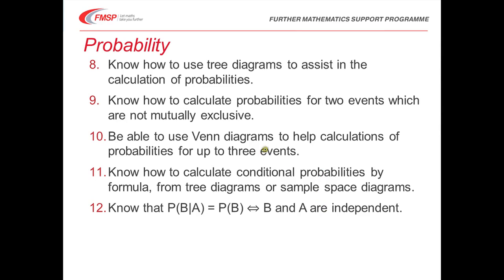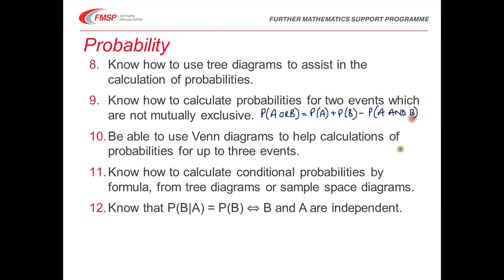You also need to be able to deal with situations where events are not mutually exclusive, remembering that the probability of A or B is the probability of A plus the probability of B, take away the probability of A and B, which you've counted twice if you add the probabilities. Of course, if the events are mutually exclusive, then the probability of A and B is zero, and it works out to be the same. A picture is worth a thousand words, so being confident about using Venn diagrams can save you a huge amount of working.